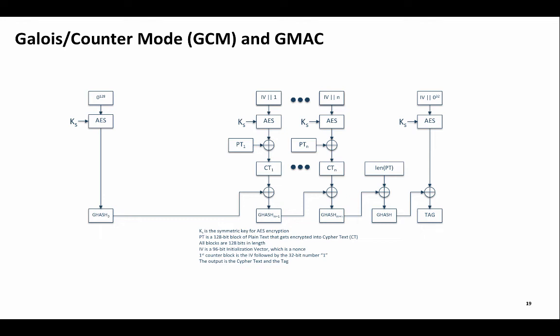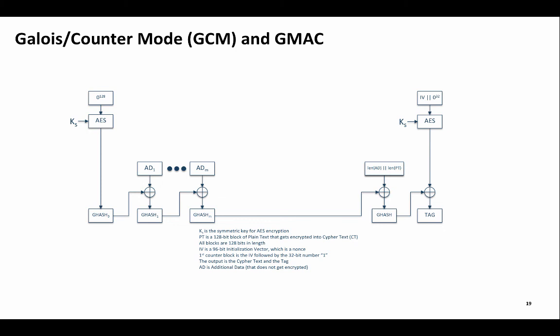When people talk about using the Galois Counter Mode, this is typically what they are talking about. However, the Galois Counter Mode can also be used to authenticate some data without encrypting it, and then encrypt and authenticate the rest of the data. The former authenticated but unencrypted data is referred to as additional data. The Galois Counter Mode simultaneously supports the authentication of unencrypted data and the encryption and authentication of the other data, and this can be used for communication algorithms that want some plain text header followed by an encrypted payload. Alternatively, it can be used for only doing the authentication of additional data.